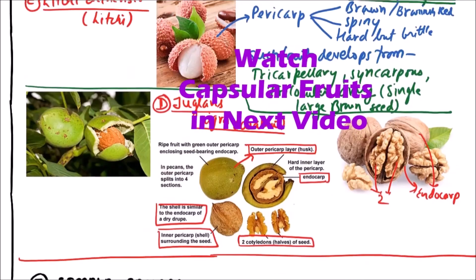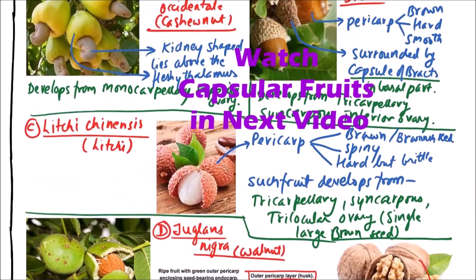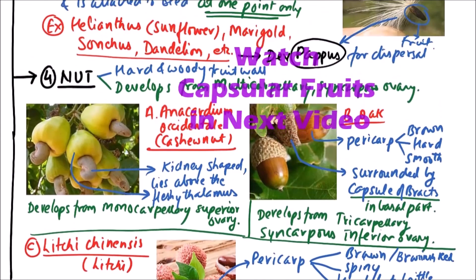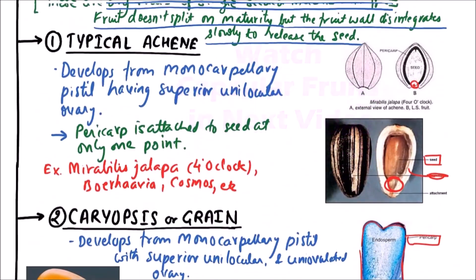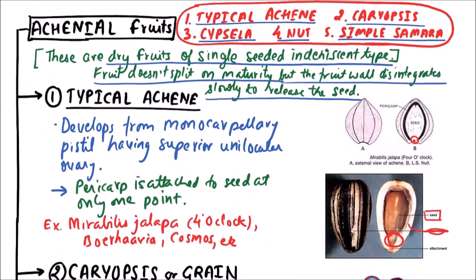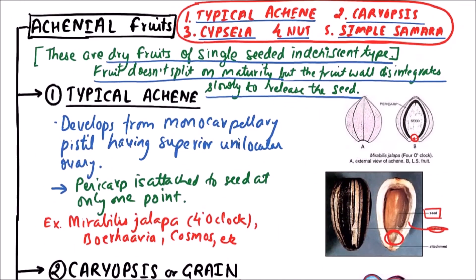So these are the various types of achenial fruits. Thanks for watching this video.